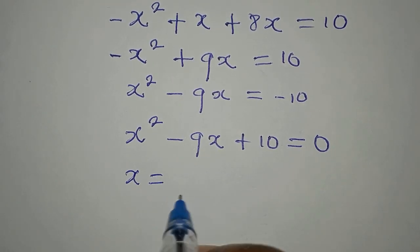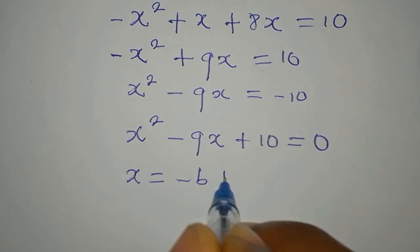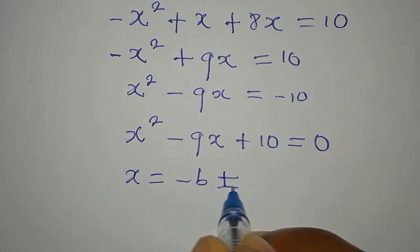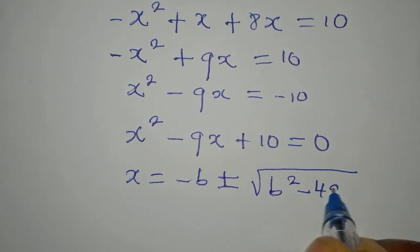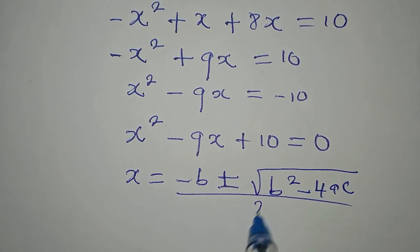Our x is minus b plus or minus square root of b squared minus 4ac all over 2a.